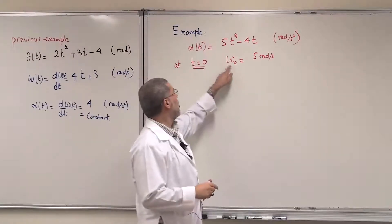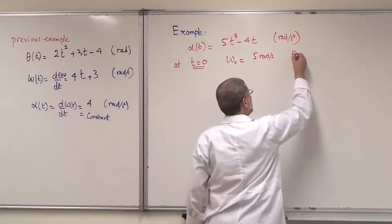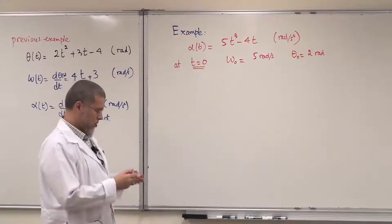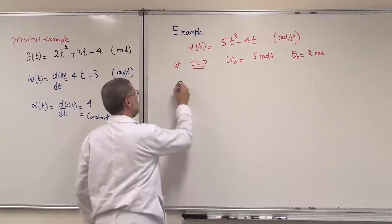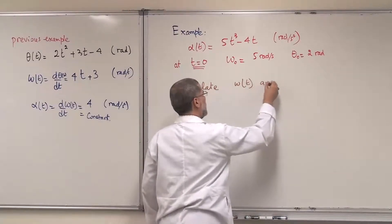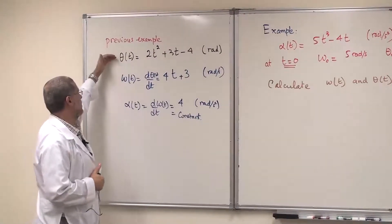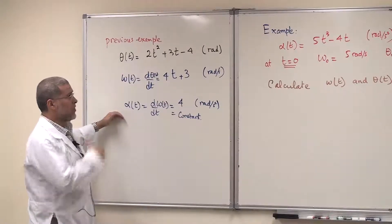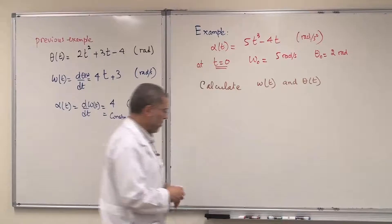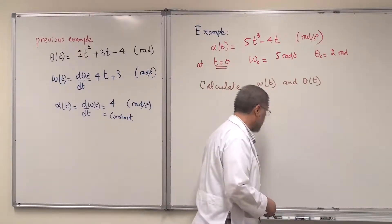At t = 0, the object was already rotating with angular velocity 5 rad/s, and its angular position is θ₀ = 2 radians — it does not start from the origin. The question is to find ω(t) and θ(t). In the previous example we differentiated to find variables; here we integrate, because we are given α and asked for ω and θ.